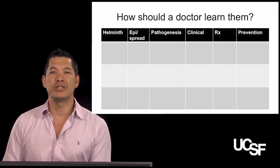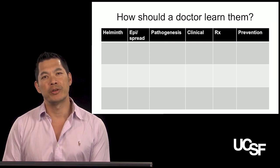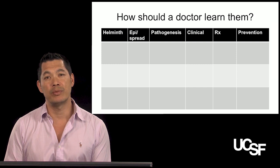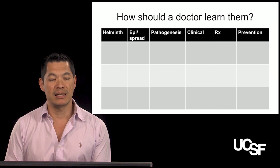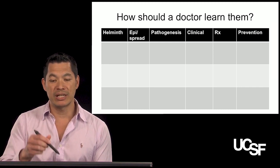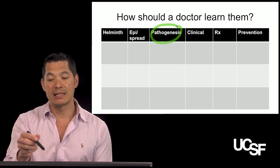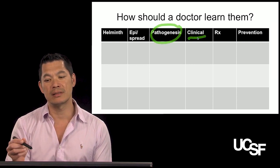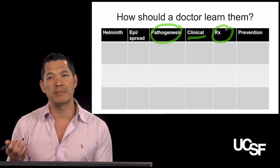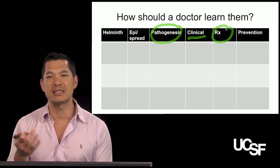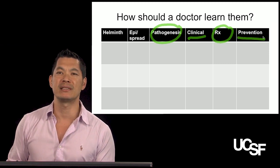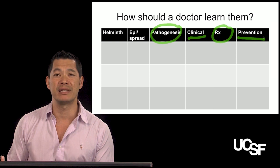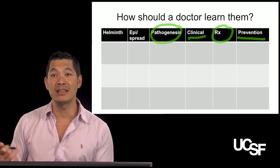On a more granular level, how should you organize your information going through this section? One way to think about organizing parasites is by epidemiology, how it's transmitted, the pathogenesis — how it causes disease — and some of the clinical manifestations. We won't emphasize treatment as much in this section, but prevention is something we always think about. Most of these parasites are prevented by regular hand hygiene and clean water.